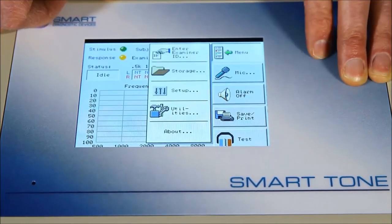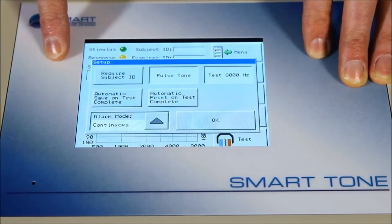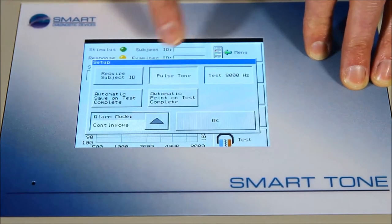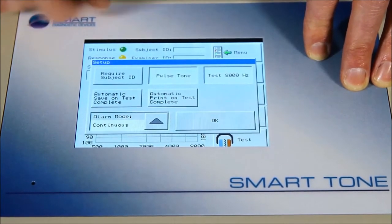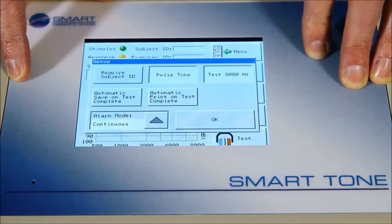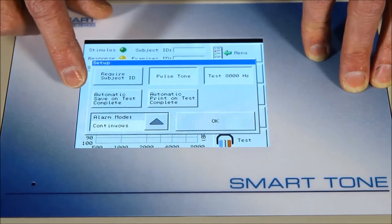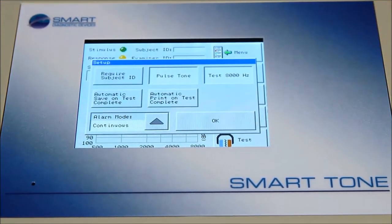Back to the high-level menu, we can also look at the setup of the device. As you can see here, there's the options of how you want the machine to perform. In this case, we've selected Pulse Tone, and we're testing all the way to 8,000 Hz. You could turn that off if you wanted, or go to a constant or continuous tone if that was required. You can also key in here that you want to automatically save every test when it's completed, or print if we're connected to a printer.